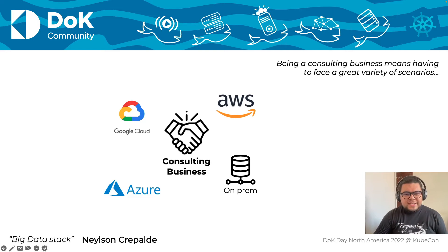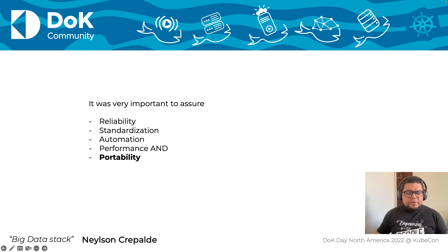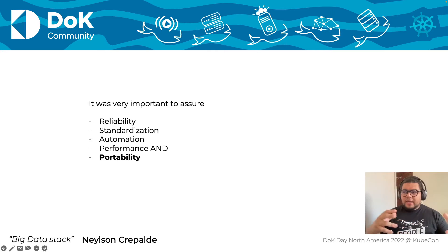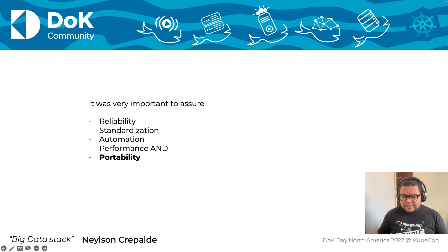We have to rebuild everything again, and this is very time consuming and energy consuming — it was simply not great for us. It was very important that our data architecture had reliability, standardization — because we didn't want to rebuild everything from scratch every time — automation, great performance, and especially portability: a data architecture that we could run anywhere, on whatever cloud provider or stack the customer had.